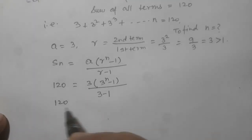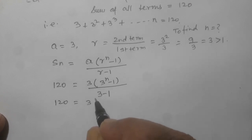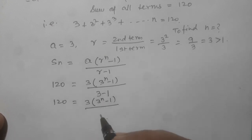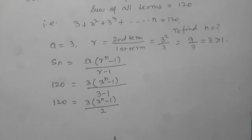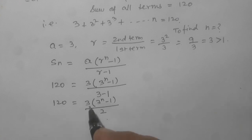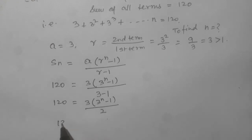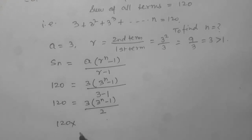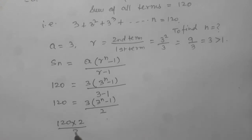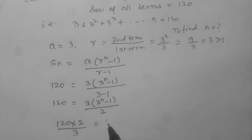So it will be 120 equal to 3 into 3 power n minus 1 by 3 minus 1 equal to 2. So this 3 power n minus 1 is multiplied by 3 by 2. This side it will be multiplied by 2, this side by 3. So 120, this is multiplying so it will divide, this is dividing so it will multiply. Equal to 3, this has gone, 3 power n minus 1 has remained.